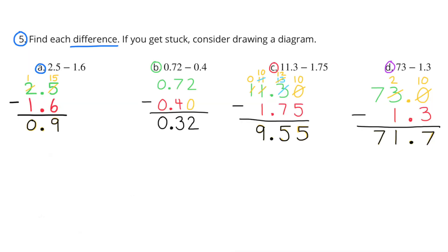Number 5. Find each difference. If you get stuck, consider drawing a diagram. A. 2 and 5 tenths minus 1 and 6 tenths equals 9 tenths. B. 72 hundredths minus 4 tenths, or 40 hundredths, equals 32 hundredths.